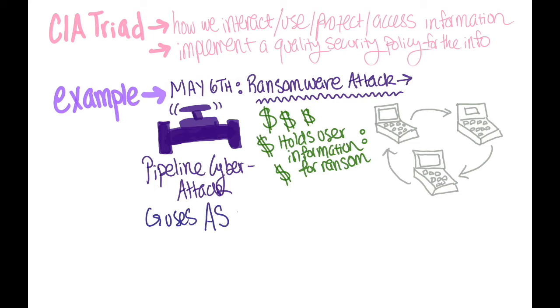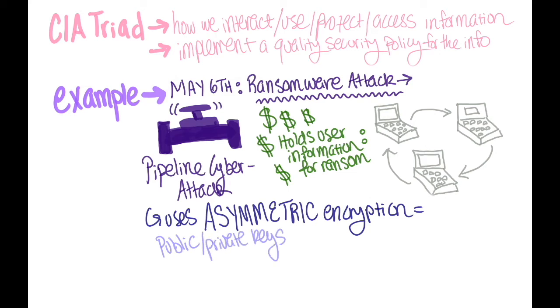Ransomware uses asymmetric encryption, which is a cryptography that uses a pair of keys to encrypt and decrypt a file. The public-private pair of keys is uniquely generated by the attacker for the victim, with the private key to decrypt the files stored on the attacker's server.